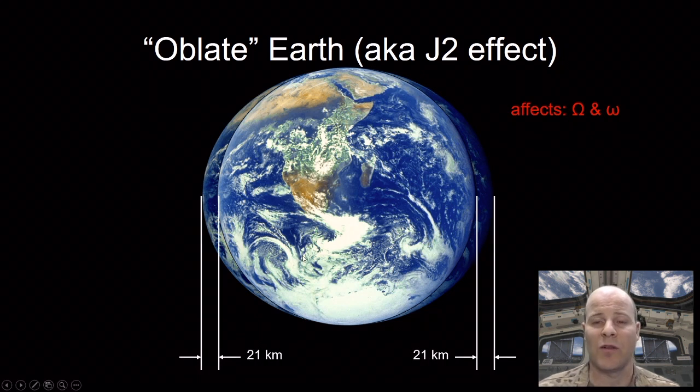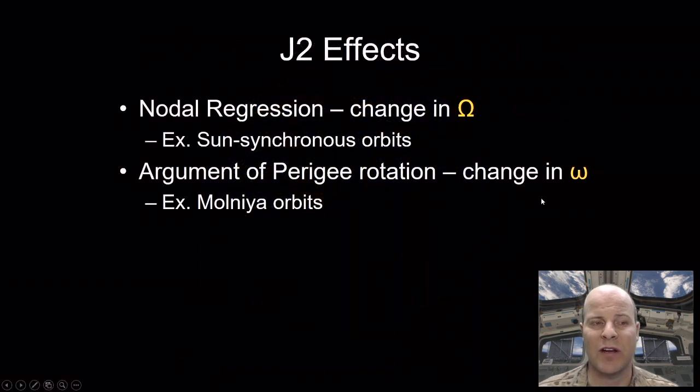is going to affect our right ascension of the ascending node and our argument of perigee. It's going to cause those things to rotate. So even though we told you in previous lessons that those things are fixed for an orbit, this J2 effect over time is going to tend to force our right ascension of the ascending node to change, and it's going to force our argument of perigee to change as well.